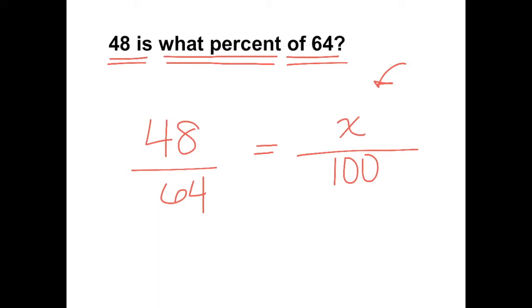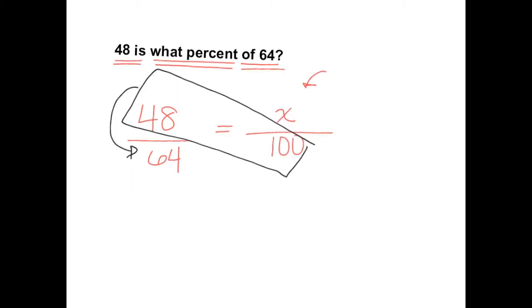To solve a proportion, we always multiply the two numbers diagonal from each other and then divide by the number that's left over. 48 times 100 is 4,800, and now we have to divide by 64.